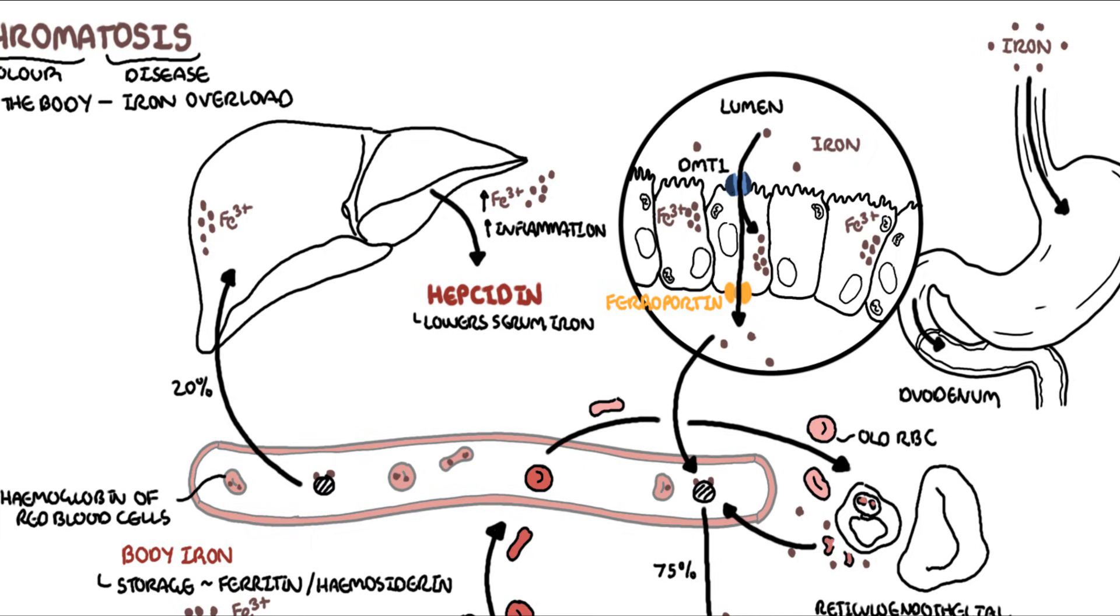Hepcidin's goal is to lower serum iron, and it does this through a number of ways, but the most important way is that it inhibits ferroportin. It essentially promotes the destruction of ferroportin both in the enterocytes as well as in the liver and in the red blood cells, thus inhibiting the release of iron into circulation and lowering serum iron levels.